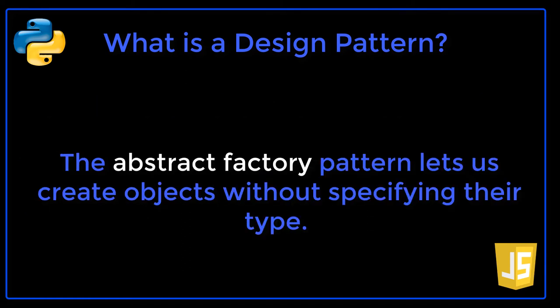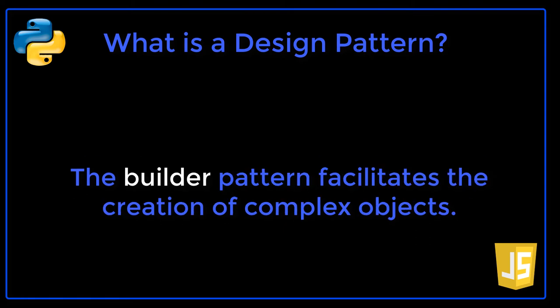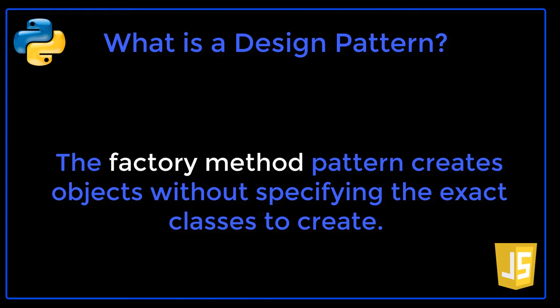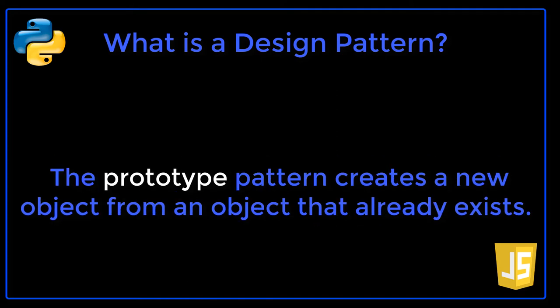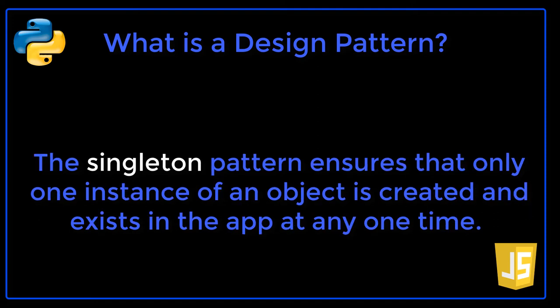The Abstract Factory pattern lets us create objects without specifying their type. The Builder pattern facilitates the creation of complex objects. The Factory Method pattern creates objects without specifying the exact classes to create. The Prototype pattern creates a new object from an object that already exists. The Singleton pattern ensures that only one instance of an object is created and exists in the app at any one time.